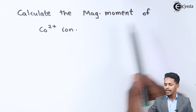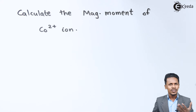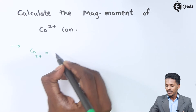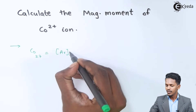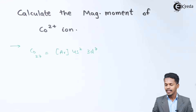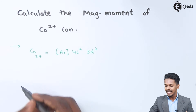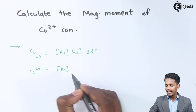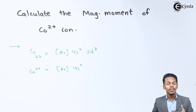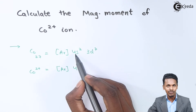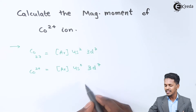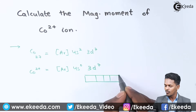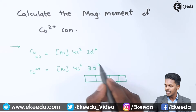Next, we have to calculate the magnetic moment of Co²⁺ — that is the cobalt 2+ ion. Cobalt has an atomic number of 27, so we can write the electronic configuration as [Ar] 4s² 3d⁷. For the Co²⁺ ion, two electrons are removed from the outermost shell, giving [Ar] 4s⁰ 3d⁷. There is no elimination of electrons from the d orbital in this case.